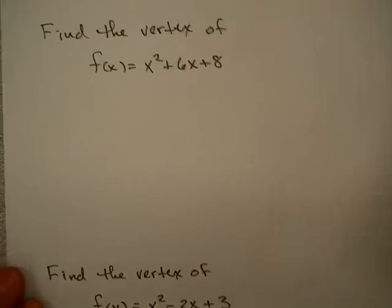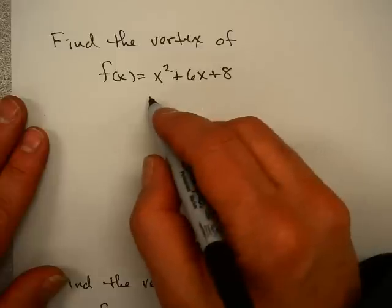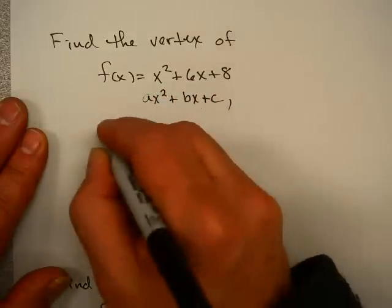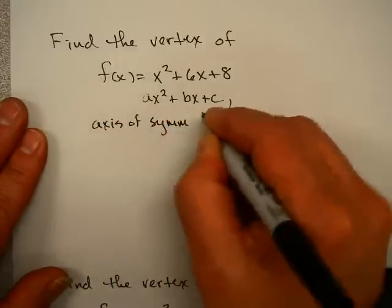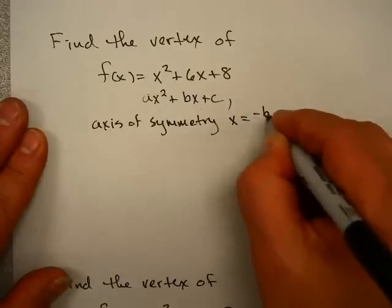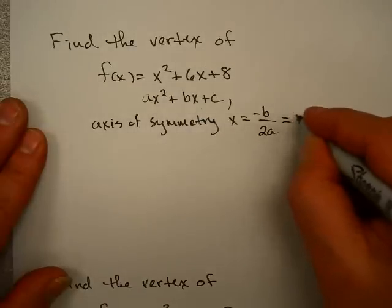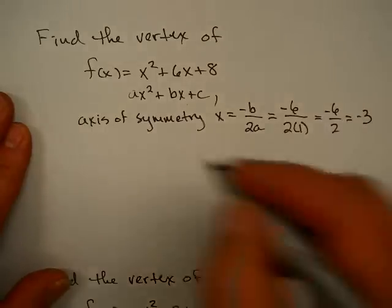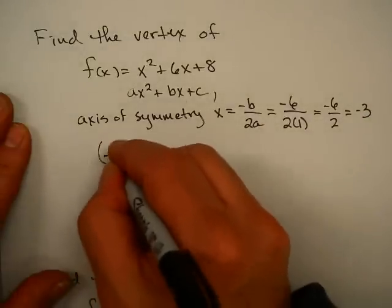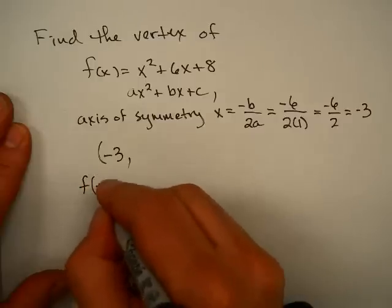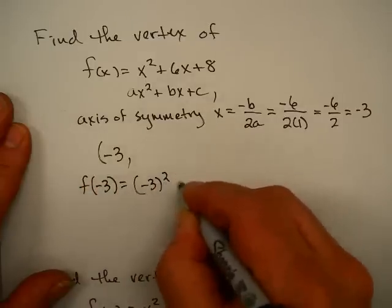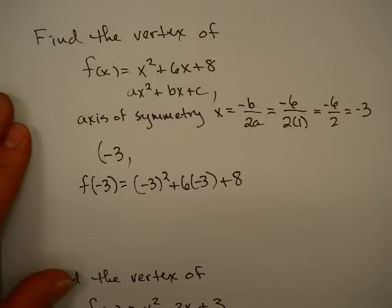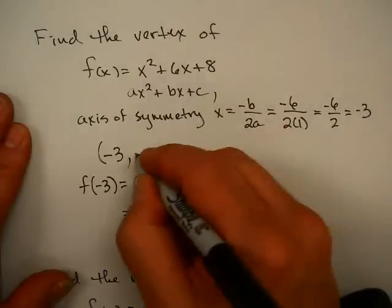Let's find the vertex using this formula. In the equation ax squared plus bx plus c, the axis of symmetry is x equals negative b over 2a. In our case, b is 6 and a is 1, so that's negative 6 over 2 times 1, which equals negative 3. The axis of symmetry is x equals negative 3, so the x-coordinate of the vertex is negative 3. Plugging negative 3 into the original equation: 9 minus 18 plus 8 gives negative 1. So the vertex is (-3, -1).